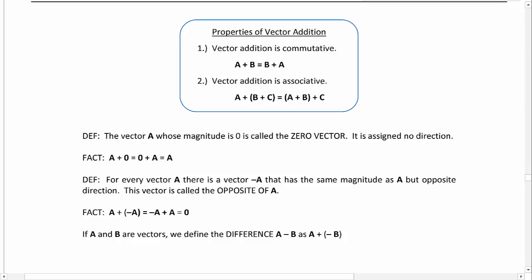For every vector A, there is a vector negative A that has the same magnitude as A, but travels in the opposite direction. This vector is called the opposite of A. It is a fact that if you add a vector with its opposite vector you get the zero vector, and that makes sense if we think about the second technique for adding that if you line up the initial side of the second vector with the terminal side of the first vector, you see we kind of just go back and forth and we end up right where we started.